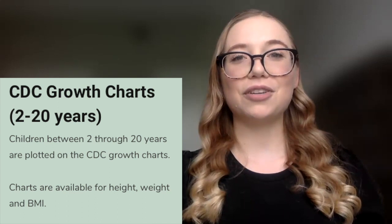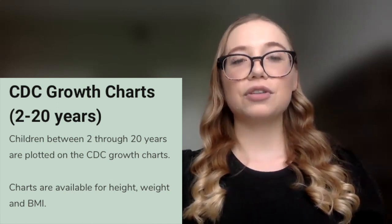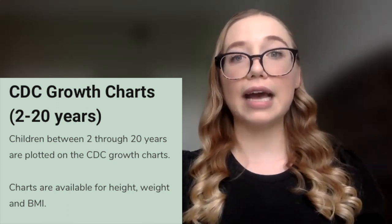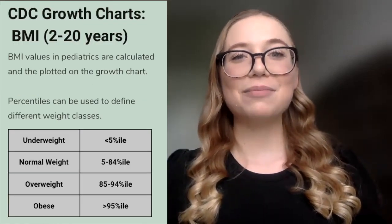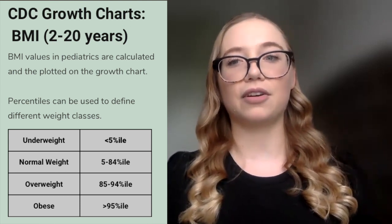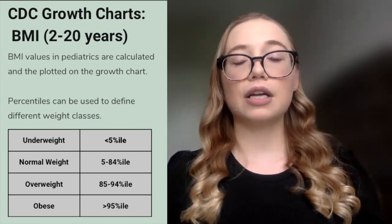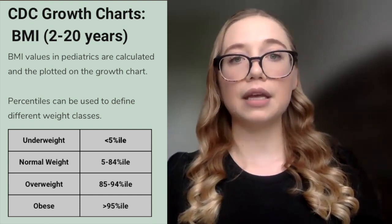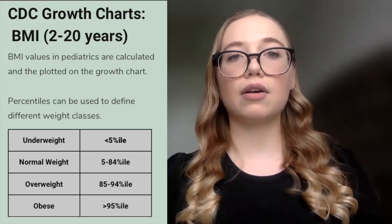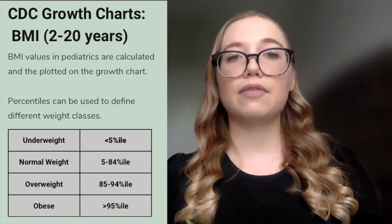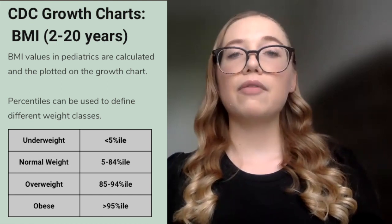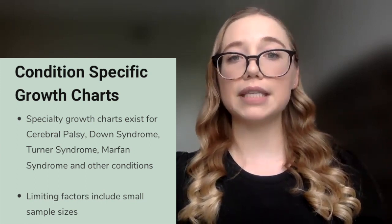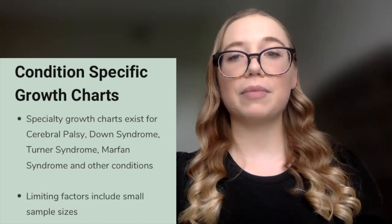Children between the ages of 2 through 20 years should be plotted on the CDC growth charts. Charts are available for weight, height, and BMI. In pediatrics we do calculate BMI, but we take it a step further and plot it on growth charts. The different percentiles correspond to different weight classifications: below the 5th percentile is underweight, 5th through 84th percentile is normal, 84th to 95th percentile is overweight, and above the 95th percentile is obese. There are also condition-specific growth charts that have been created for cerebral palsy, Down syndrome, Turner syndrome, Marfan syndrome, and other conditions. Note that there are some limitations to these charts, including small sample sizes, so I always recommend cross-comparing trends and ensuring your patient is achieving their expected weight gain and growth potential.